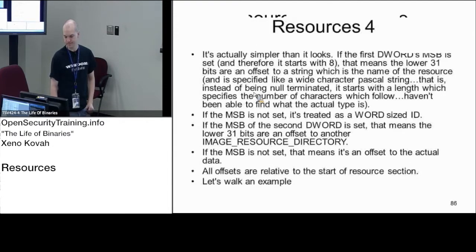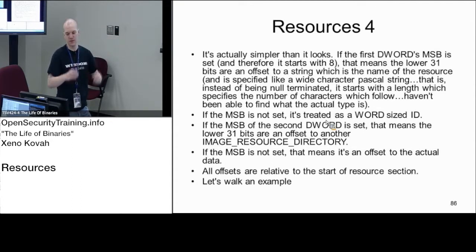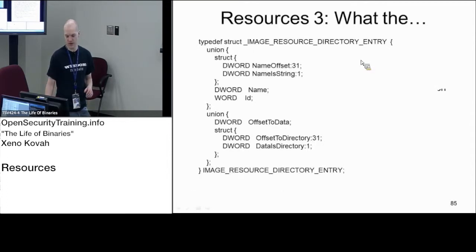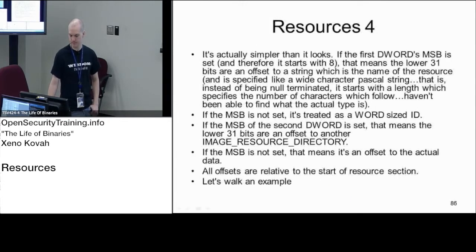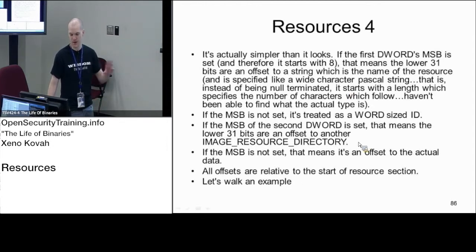If the most significant bit of the first DWORD is not set, then we're talking about a word-sized ID — if you've got a zero in your most significant bit, this overall DWORD should be treated as an ID for a particular resource. That's for the first DWORD. Then there's the second DWORD, which is a different union: if the most significant bit of the second DWORD is set, it's going to be a directory — which is why you can think of it like a file system. If the most significant bit of the second DWORD is set, the lower 31 bits are an offset to another image resource directory.